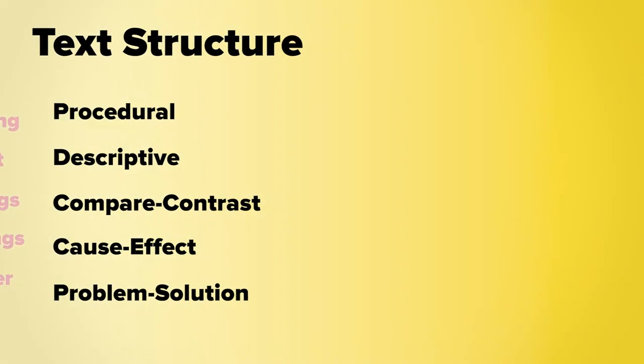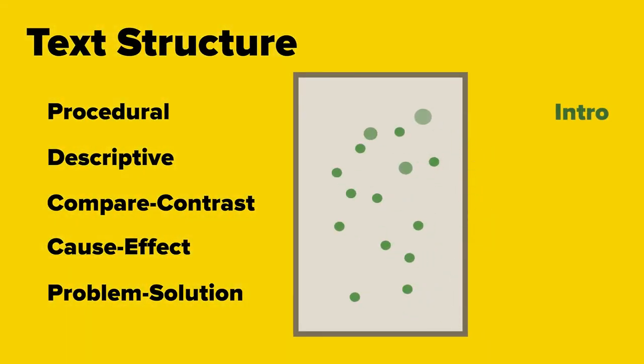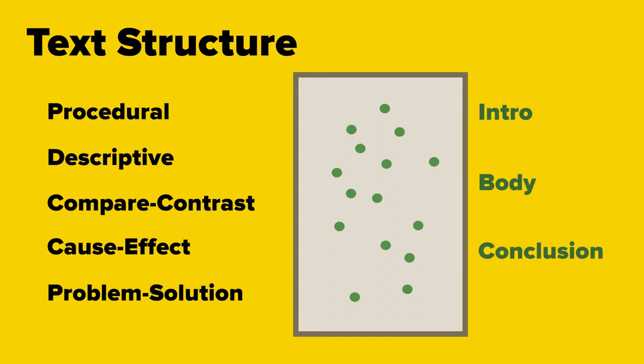Once students know of the five different ways to organize nonfiction texts, teach them how to discern which one an author has used. That comes down to analyzing the type of information within the text. Teach students to look carefully at the topic revealed in the introduction, the type of information in the body, and the kinds of transitions used among sentences.